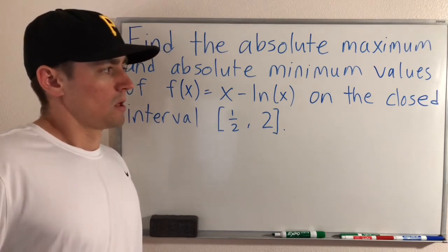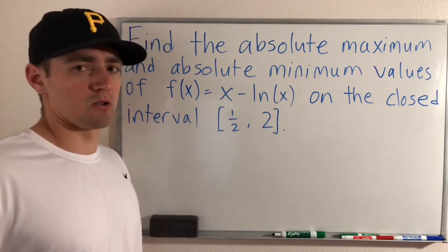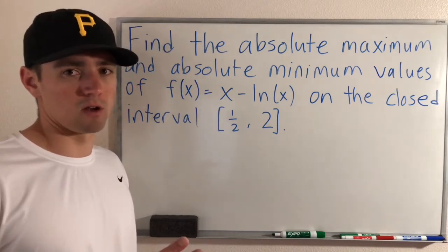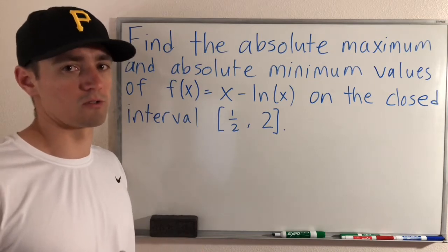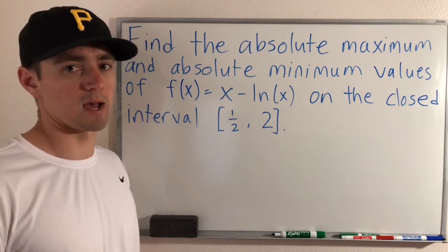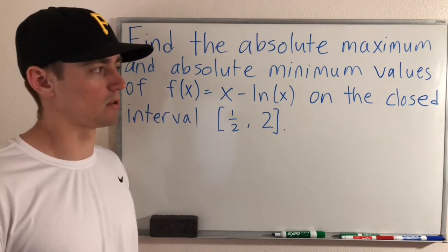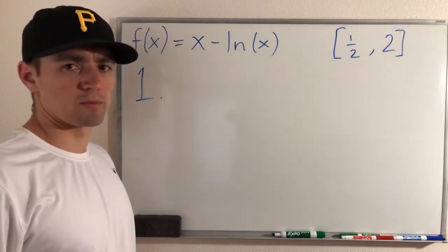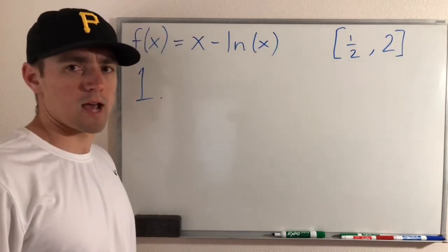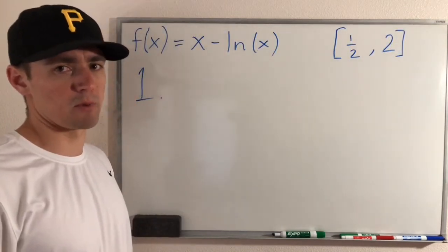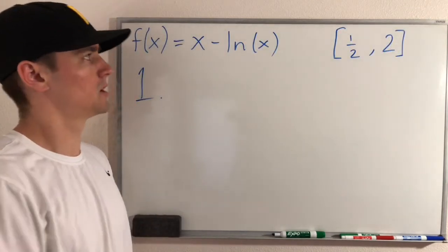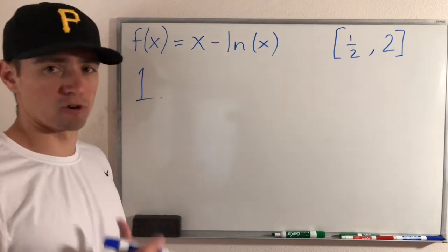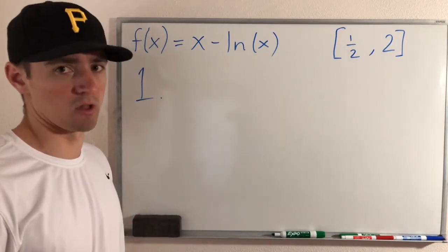So what we want to do is figure out what those absolute max and min values actually are. When you're trying to do a problem like this, there are three steps you're going to want to follow in order to find these absolute maximum and minimum values. The first step is to find the critical numbers.